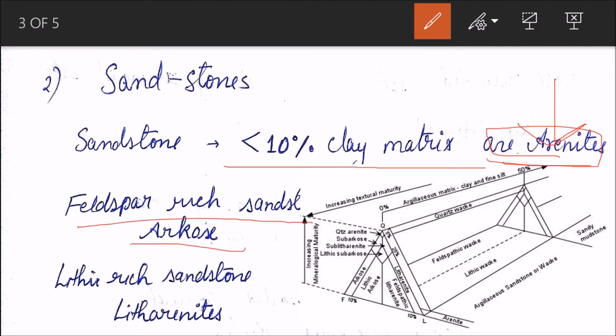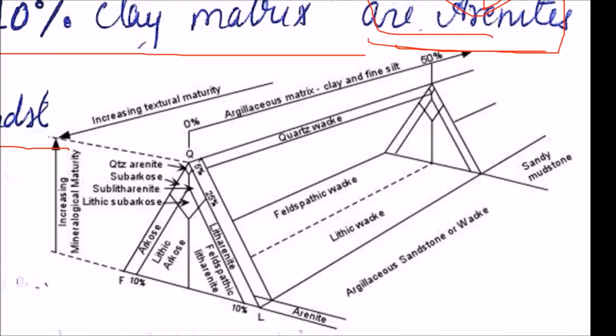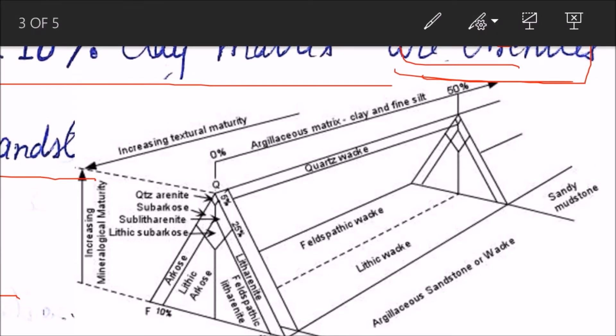Now feldspar-rich sandstone is called arkose. Lithic-rich sandstone are called litharenites. If these three terms are clear, now we can go into this diagram to understand it.